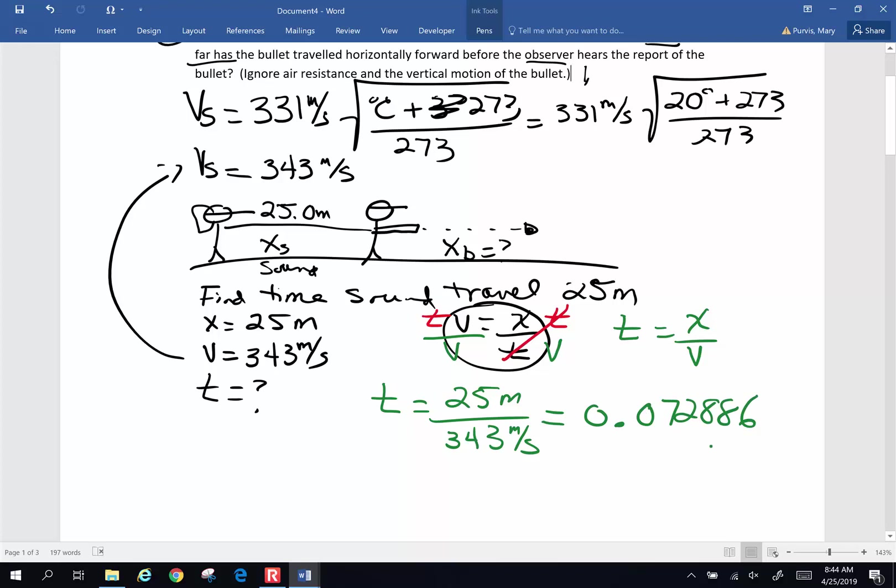Now we're going to round that off to 3 sig figs. So 0.0, this is a placeholder, not a sig fig. 7, 2, this will round off to a 9. Now what's going to happen with my units? Meters will cancel meters. So I've got meters divided by meters per second. Invert and multiply times seconds divided by meters. Those are going to cancel. This will be seconds.